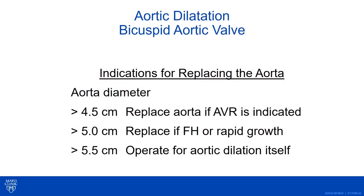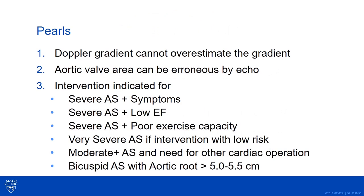You also need to know indications for aortic root replacement. If you're doing AVR because the patient meets other criteria for intervention and their aorta is at least 45 millimeters, you can also replace the root. If the patient has a familial history of aortic dissection or a rapidly growing ascending aorta, intervene on that root regardless. Otherwise, if it reaches 5.5 centimeters. The pearls for aortic valve stenosis: remember, the Doppler gradient cannot overestimate; the valve area can be problematic by echo; and those are the intervention indications as discussed.